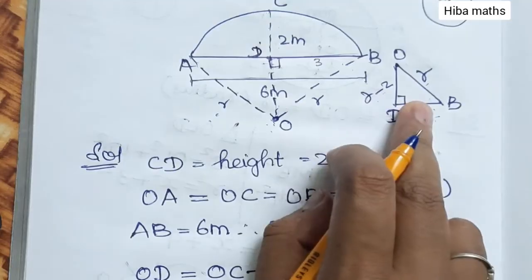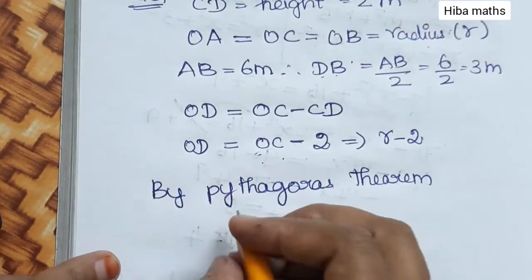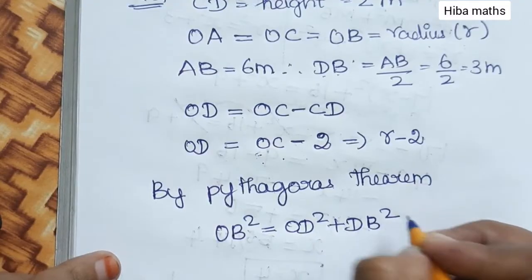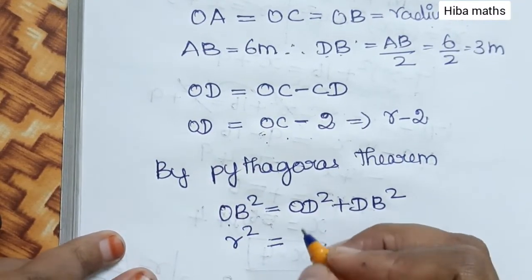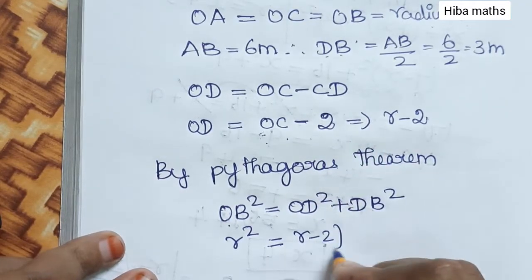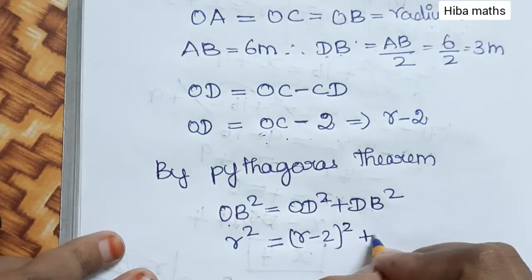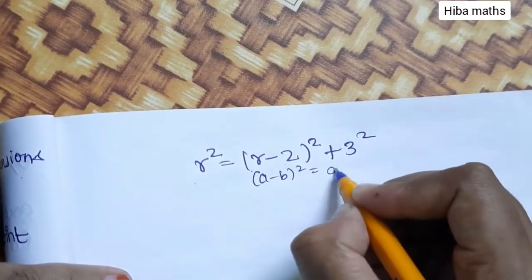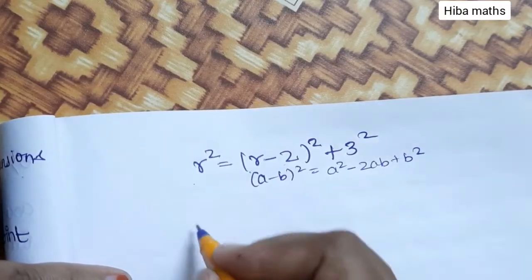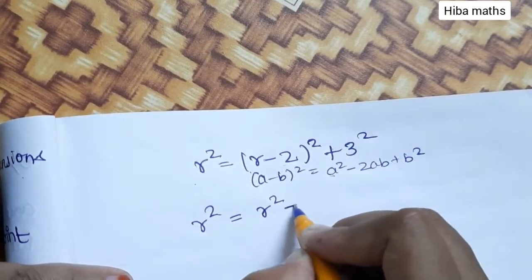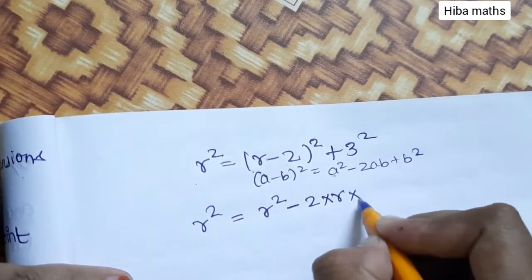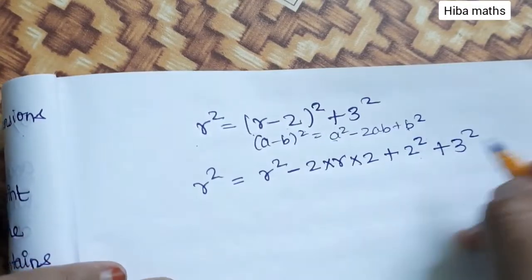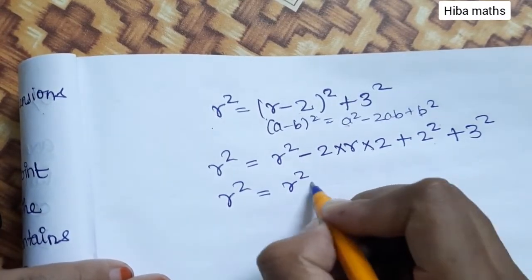By Pythagorean theorem: OB² equals DB² plus OD². So OB² equals OD² plus DB². Substituting: R² equals (R minus 2)² plus 3². Expanding (R-2)² using the formula (a-b)² equals a² minus 2ab plus b²: R² equals R² minus 4R plus 4 plus 9.